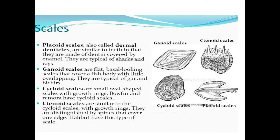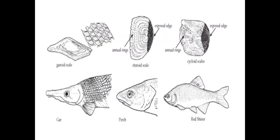Here is a garfish which shows ganoid scales and how they are arranged. This is a perch fish showing ctenoid scales. Here is a red shiner fish which shows cycloid scales, and these are the rings present on the scale which show how aged this fish is.